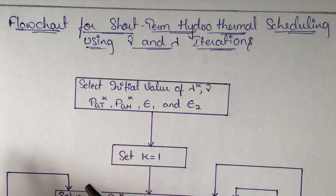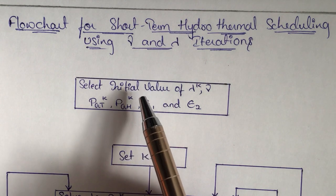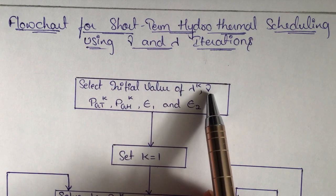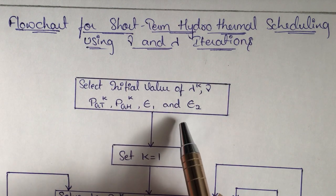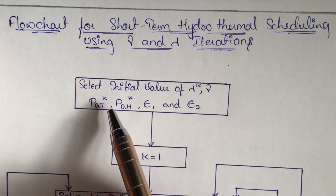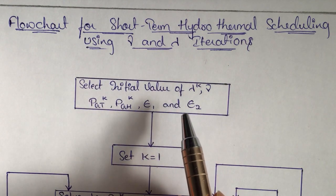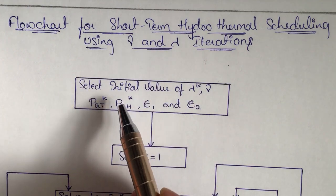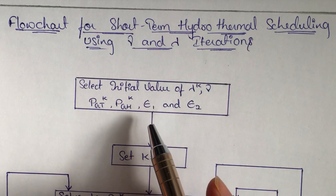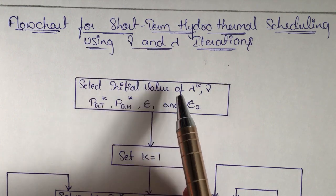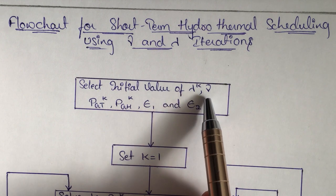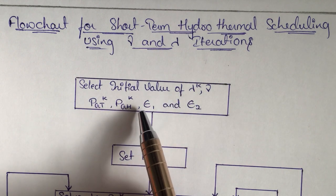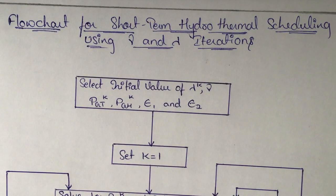If you remember the previous video, the first two steps of the algorithm are to define the values of lambda, gamma, PGT, PGH, epsilon 1, and epsilon 2. In any flowchart, our first step is to initialize the parameters. We are initializing six parameters: lambda k, gamma, PGT k, PGH k, epsilon 1, and epsilon 2.